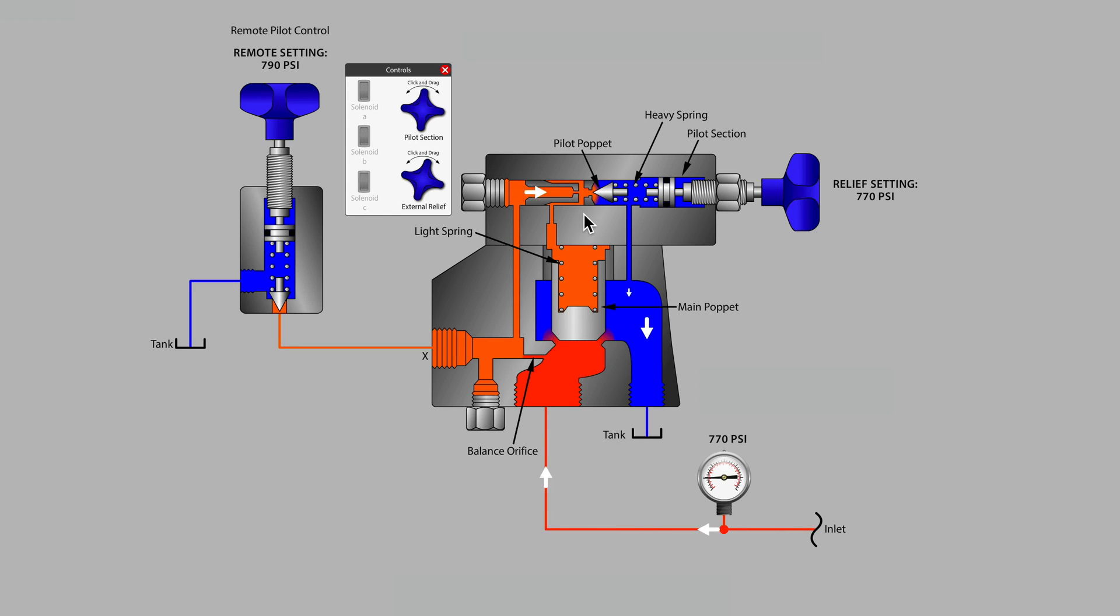You'd be quite correct to say that they are in parallel. One pilot section has flow back to tank here, and the other pilot section, if it is open, has flow back to tank there. So they are plumbed in parallel, and this is simply the case of path of least resistance where the pilot section that is set the lowest is in control of the main poppet for a pilot operated relief valve.